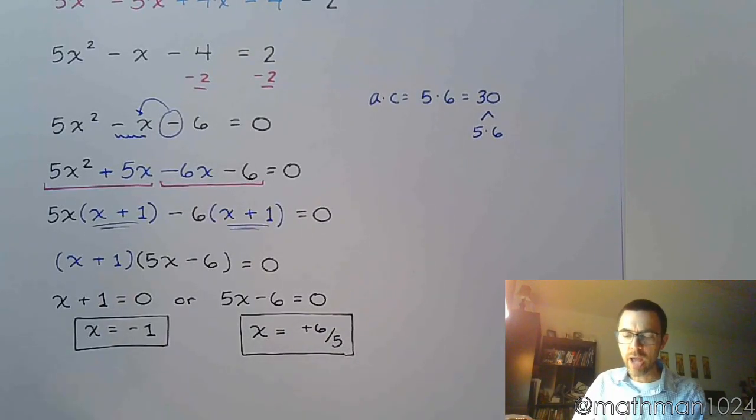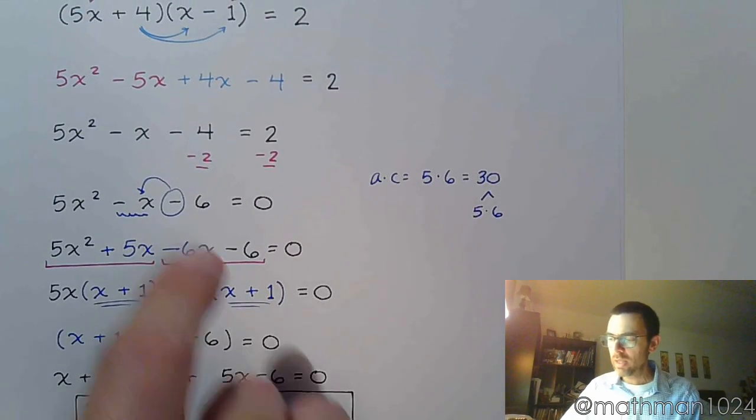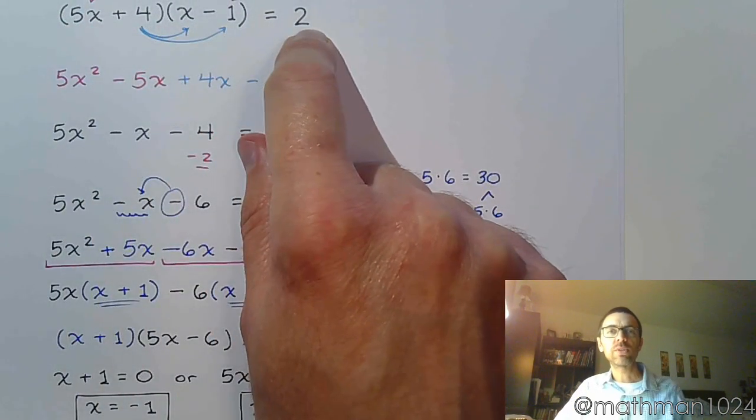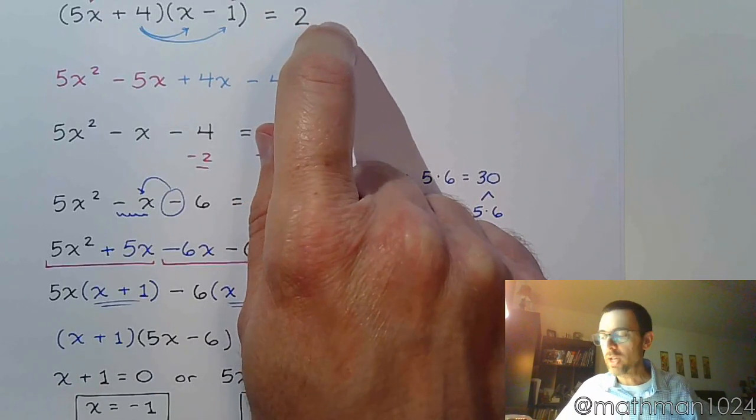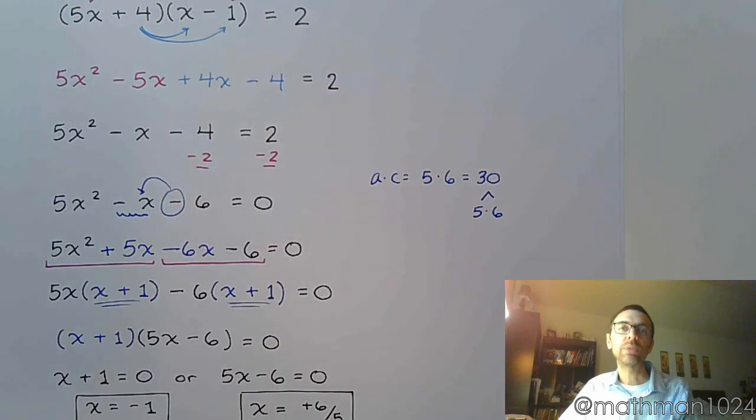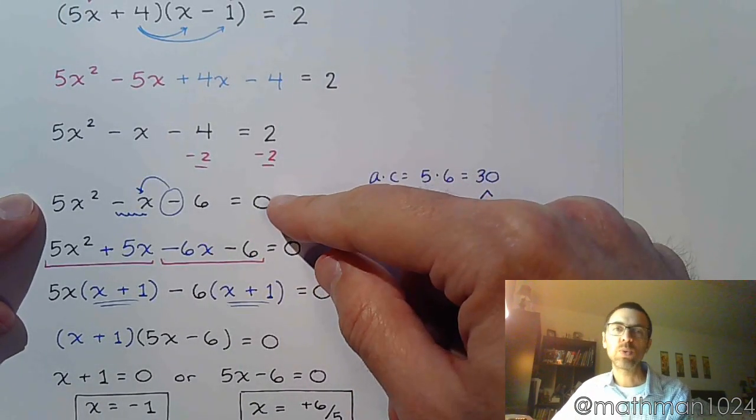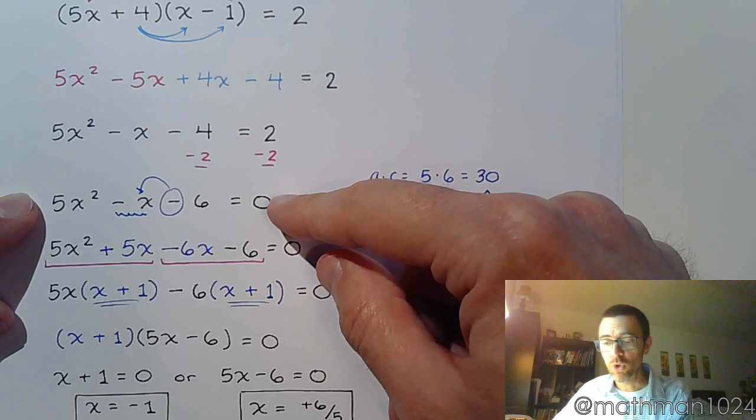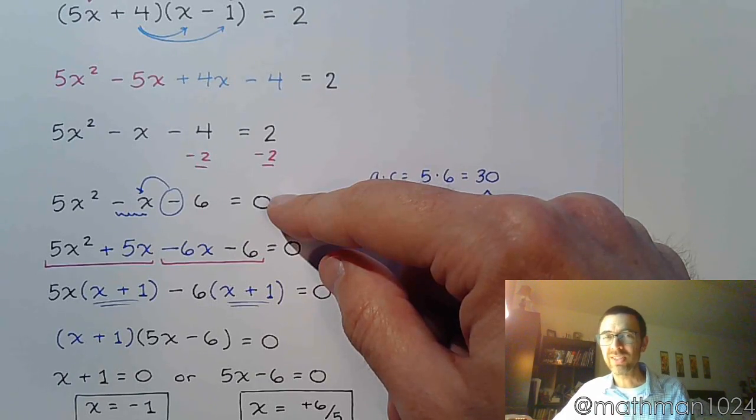So let's make sure we understand what happened in this problem. So at the very beginning, this problem was not set up for us to go ahead and factor. We needed to move the two over first. But before I could do that, I needed to multiply the stuff out so that when I subtracted the two, it had a place to go. So once I did that, I'm now at this step, and now it's quadratic. So it's quadratic, which right now means we just factor. Okay? That's what we know, but there are going to be other methods that we're going to talk about for solving things that can't be factored. So you want to stick around for that.